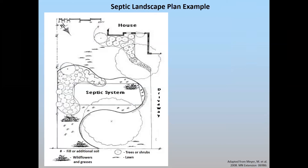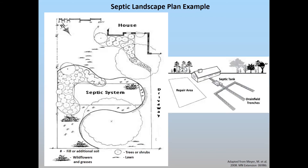It's always good to have a plan. This is one particular plan from a publication out of Minnesota, just to give you some ideas on how to landscape a system. One important point: always remember where the repair area would be and how to build that into the landscape. How do you landscape the repair area minimally so that several decades down the road, when you need to use it, you're not having to tear up plants you've spent money and time on? A drain field has a lifespan of 30 plus or minus years, depending on its use.